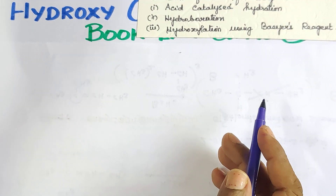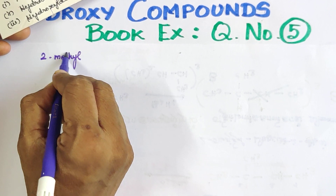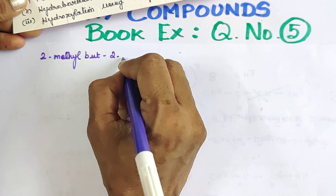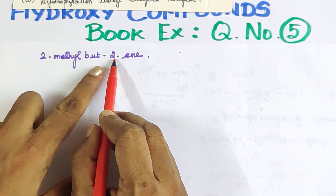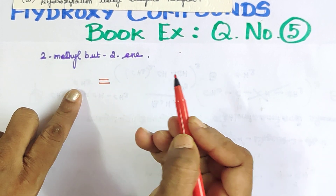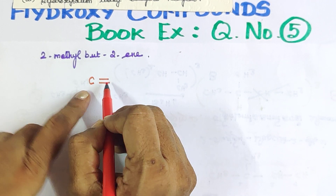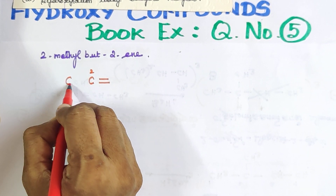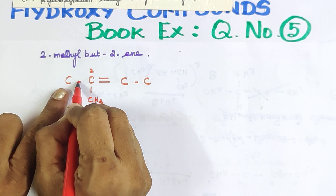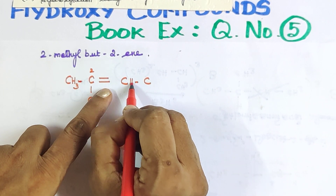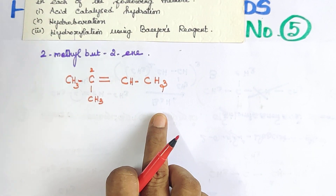The first compound is 2-methyl-but-2-ene. The double bond is at the second carbon, and the structure has 4 carbon atoms with a methyl branch. Let us draw the structure of 2-methyl-but-2-ene before proceeding to the first reaction.